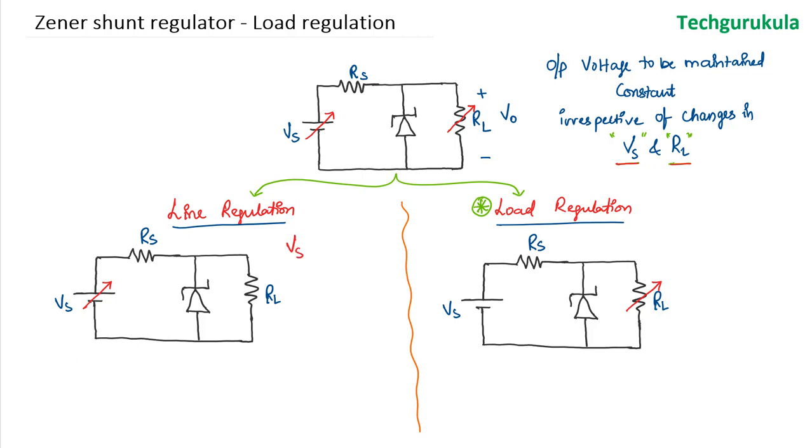When we say line regulation, Vs is changing but the load current or load resistance is fixed. Whereas when we come to load regulation we assume Vs is fixed but the load current or load resistor is changing.